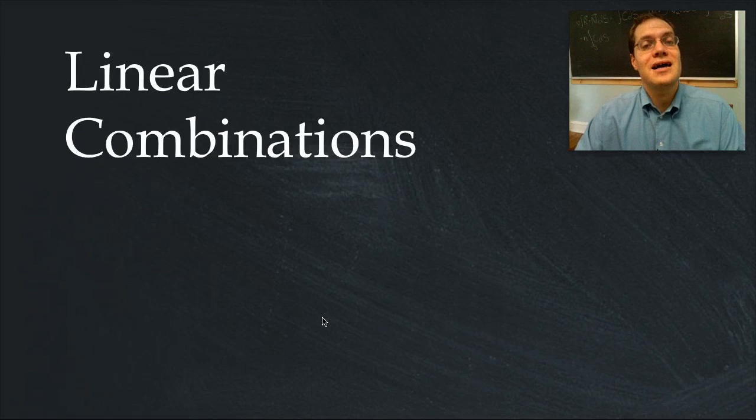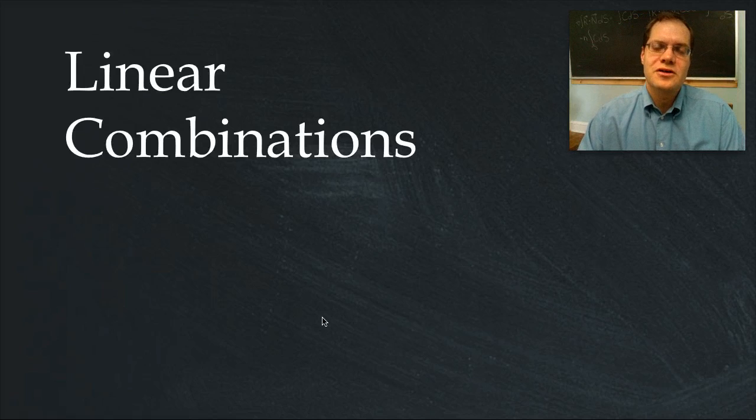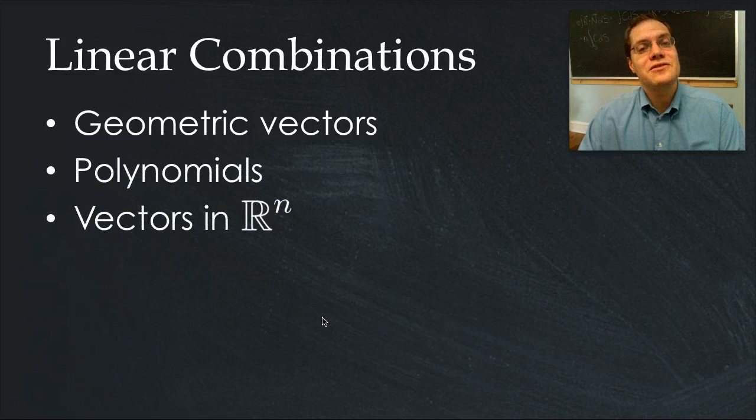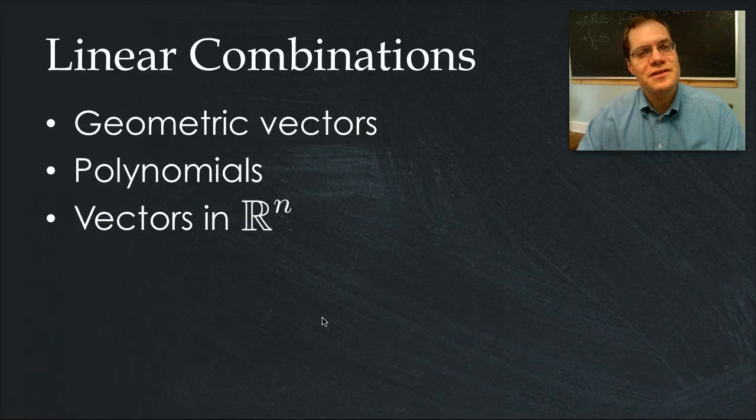The first important point is that the concept of linear combinations applies to very different kinds of objects. We'll start with geometric vectors, then move on to polynomials, and finally to vectors in R^n, more specifically vectors in R^3.